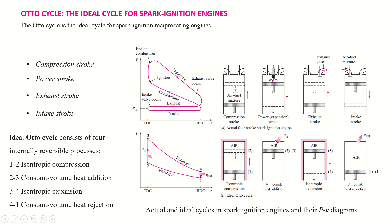The second process is heat addition, where Q-in represents the amount of heat added. Heat is added by burning the fuel. When the fuel is ignited, a large amount of heat is produced. This second process is constant volume heat addition — from the start of ignition to the end of combustion, volume is constant while pressure is increasing, so this is constant volume heat addition.